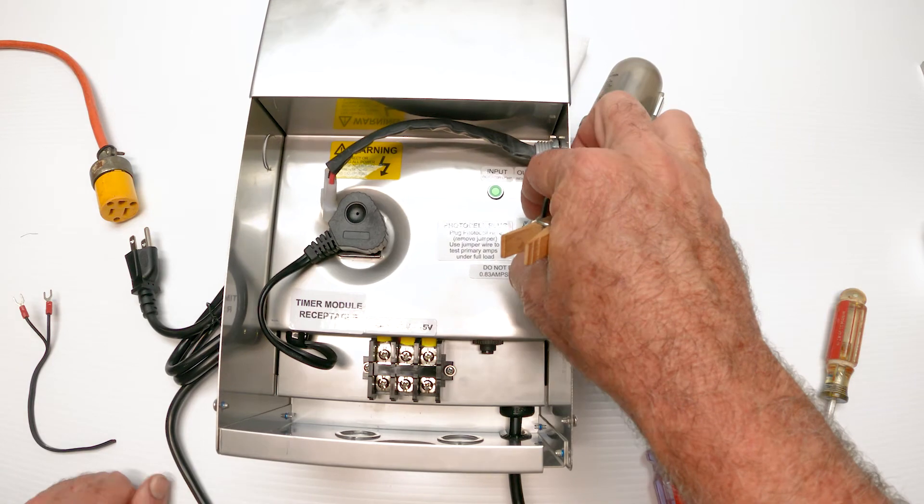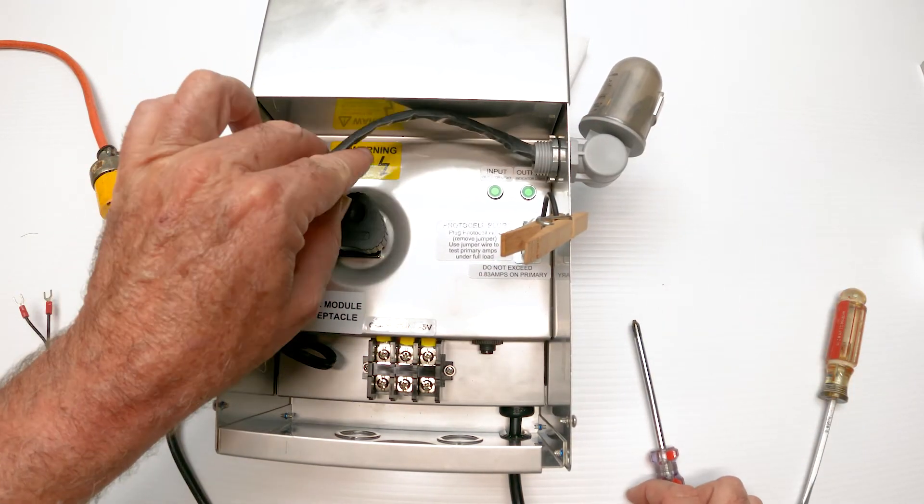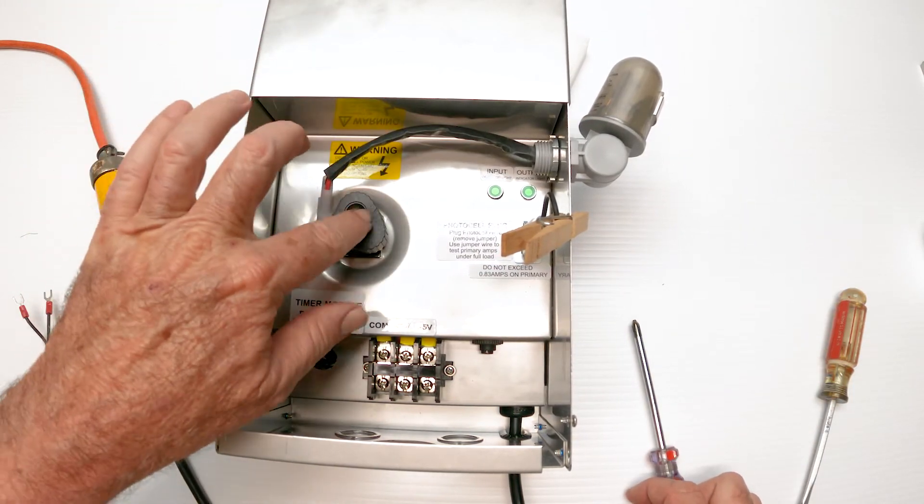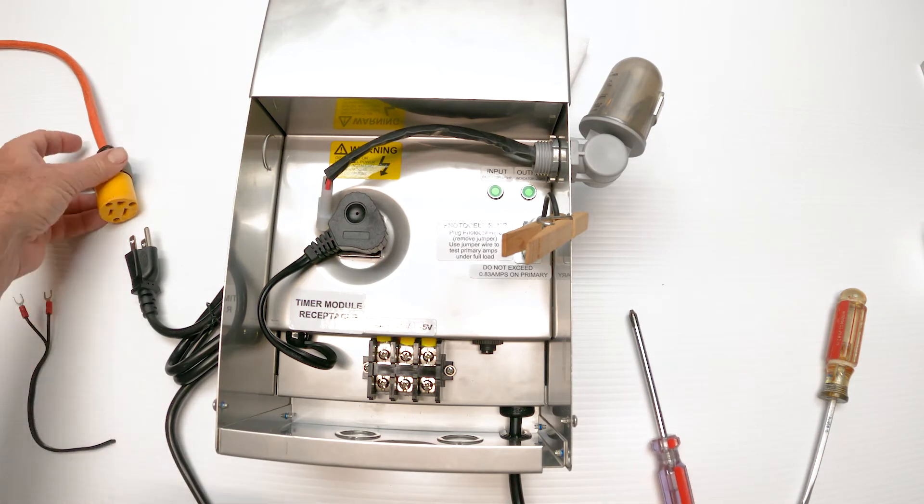Basically, I'm taking the transformer back to when you got it brand new. So jumper's in, plug's in the socket, photocell's disconnected, timer mechanism's gone. I'm going to plug the unit in.